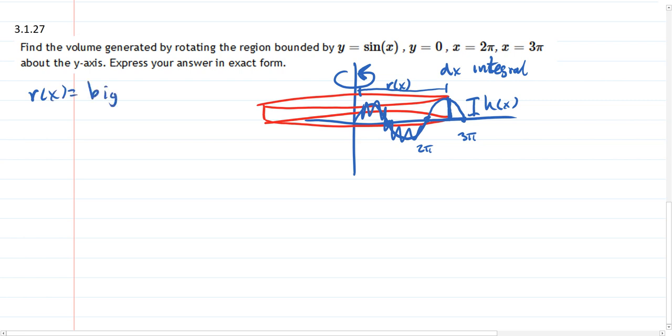So it's big minus small. Alright, big function is going to be the one on the right, which is going to be x, it's your current x coordinate. Small, we've got the y-axis which is going to be zero. So this is just r of x equals x.